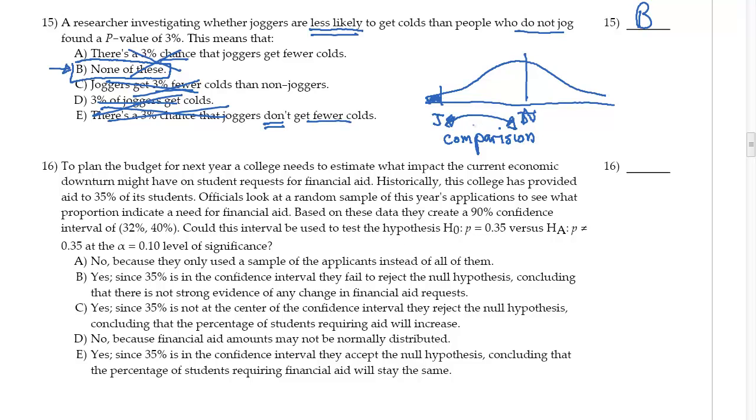Okay, number 16: to plan the budget for the next year, a college needs to estimate what impact the current economic downturn might have on student requests for financial aid.